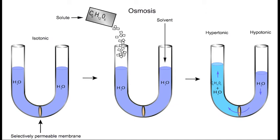Isotonic solutions have an equal solute concentration, so water moves equally in both directions. Water in a cell presses against the cell membrane and exerts an osmotic pressure.